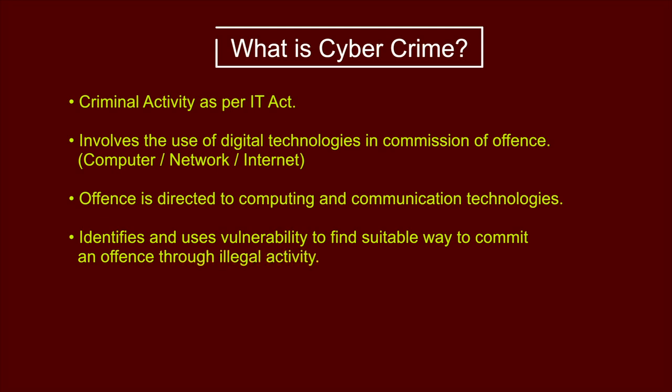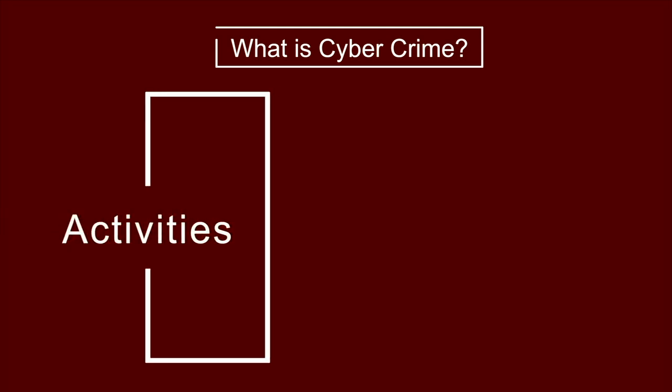How do cybercrimes get performed? Cybercriminals identify and use vulnerabilities to find a suitable way to commit an offense through illegal activity. They find a way to enter into the system and then make use of that to commit cybercrime. In short, cybercrime is criminal activity conducted with the help of digital technologies — computers, internet, or networks — exploiting vulnerabilities available in the system.